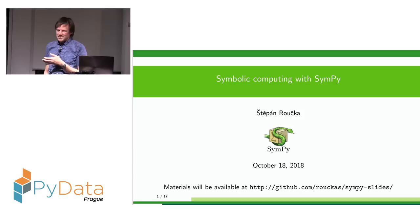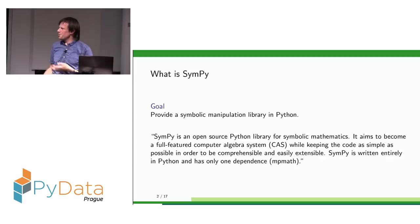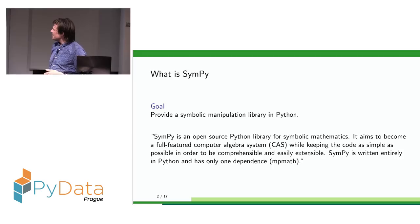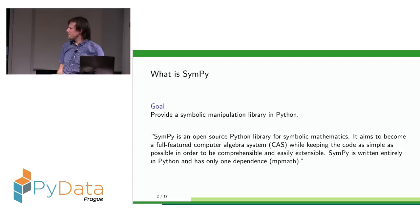What is SymPy? It's a library which has a goal to provide facilities for symbolic manipulation of expressions. It's an open source library, and it aims to become — what it already is — a full-featured computer algebra system. Thanks to working with Python, it can keep the code as simple as possible, given the algorithms it implements, making it comprehensible and easily extensible.